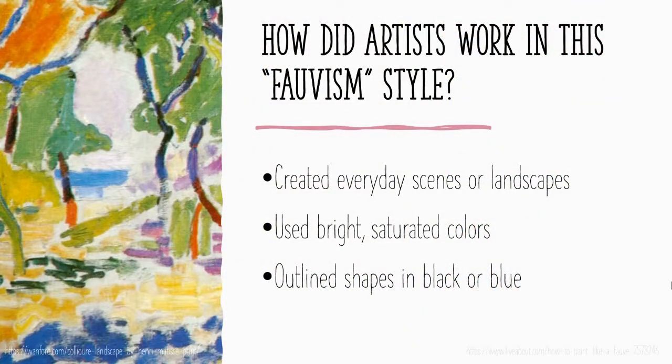So how did artists work in this Fauvism style? Artists created everyday scenes or landscapes. They used bright, saturated colors and they often outlined shapes in black or blue.